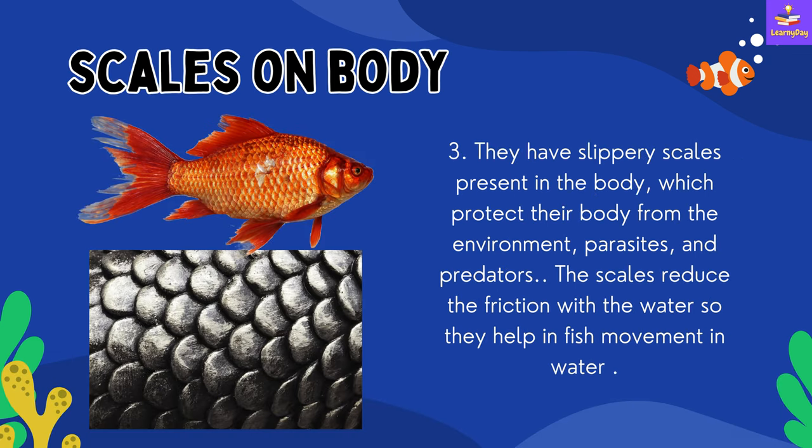Number 3: Scales on the body. Fishes have slippery scales present on the body which protect their body from the environment, parasites, and predators. The scales reduce the friction with water, so they help in fish movement in water. Here you can see how the scales look like.